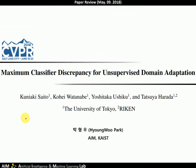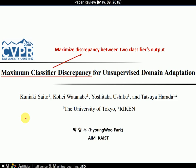Hello, today I will review the paper accepted in CVPR 2018 Oral. The title is Maximum Classifier Discrepancy for Unsupervised Domain Adaptation. Maximum classifier discrepancy means that this paper proposes a method that maximizes discrepancy between two classifiers' outputs, and this can solve the unsupervised domain adaptation problem.